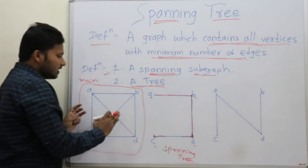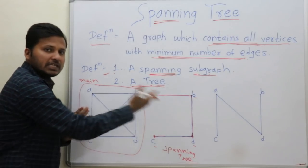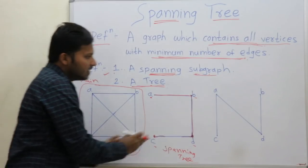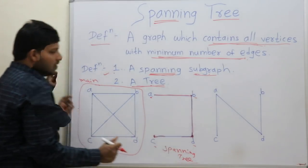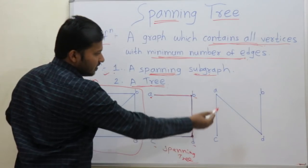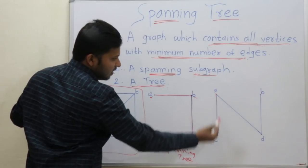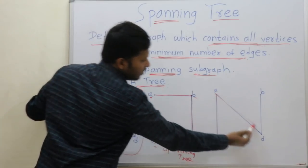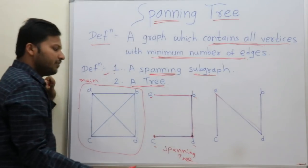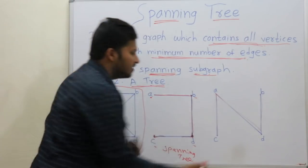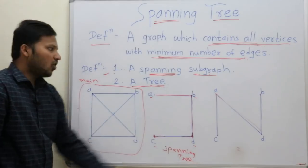For the same graph there can be many spanning trees. Here is another spanning tree: if you take edges A to C, then A to D, and D to B, it forms another spanning tree.